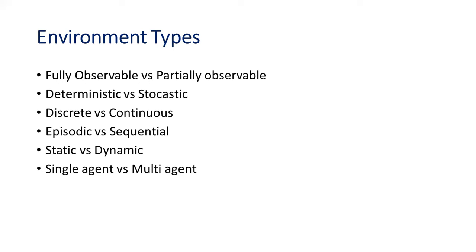The next type is discrete versus continuous. A discrete environment has a finite number of states — only a limited number of states exist. For example, in a chess game, we know exactly how many pieces there are and what moves are possible at each step. Continuous environments, like football or cricket, vary — they are not always the same discrete states; the environment varies with each move.